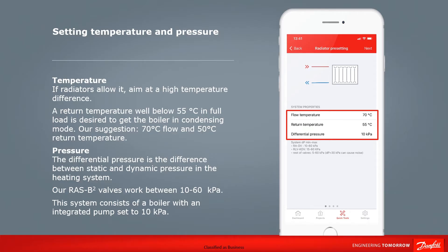Let's set the flow temperature to 70 degrees and the return temperature to 50 degrees. As the RAS B2 valve works between 10 and 60 kilopascal, let's assume that the boiler has an integrated pump set to 10 kilopascal. Once you've entered this information, press next in the top right hand corner to continue.